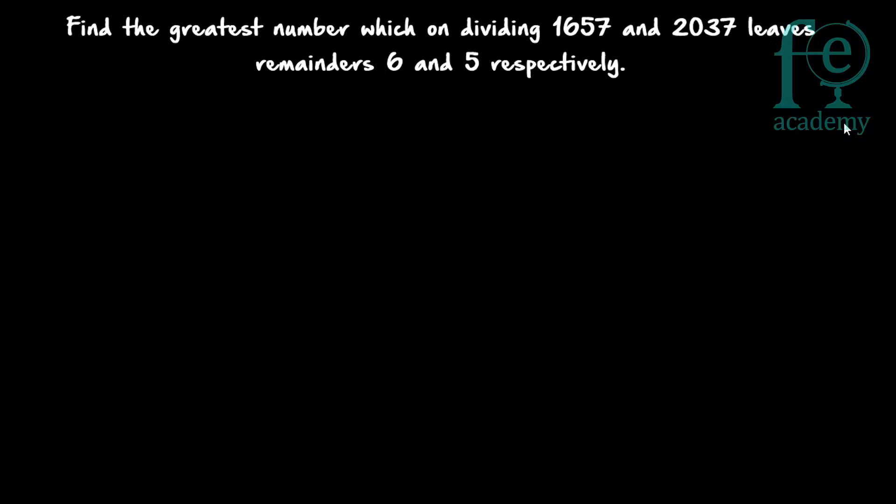Hi friends, welcome to today's class. Today's question is: find the greatest number which, on dividing 1657 and 2037, leaves remainders 6 and 5 respectively.